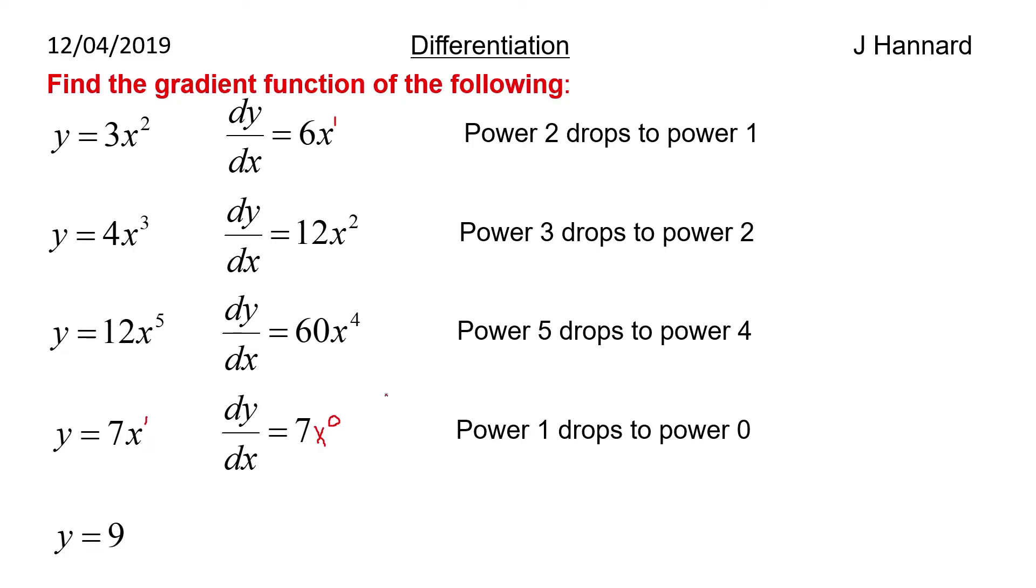And if we have y equals 9 then remember we've got this artificial x to the 0 here. So we bring the 0 to the front and multiply by everything. And that's just going to be 0, because anything times 0 is 0. So dy by dx there is 0. Power 0 drops to nothing.